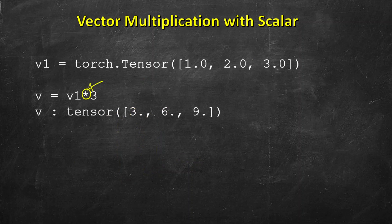We can do it in PyTorch using the asterisk symbol for multiplication and it's quite easy.